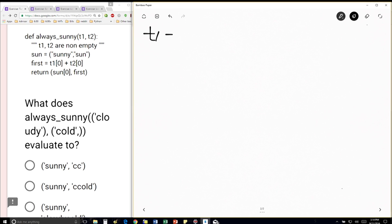t1 is going to be equal to cloudy. These are strings, but I'm not going to bother putting the quotes. And t2 is equal to cold, comma. OK? So remember what I said.